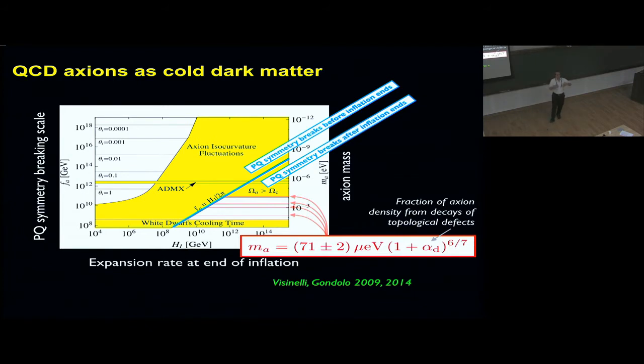If there's no production from axionic strings, then the axionic strings add an uncertainty, which is parameterized by this factor alpha, the fraction of axions produced in the decay. According to the range of simulations, the mass can go from the 70 microeV up by an order of magnitude. This is the mass scale on the right, which is inversely proportional to the PQ symmetry breaking scale—large masses at the bottom and small masses at the top. The range expected nowadays is around 100 microeV.